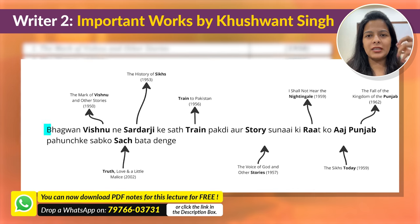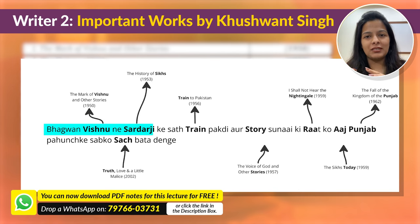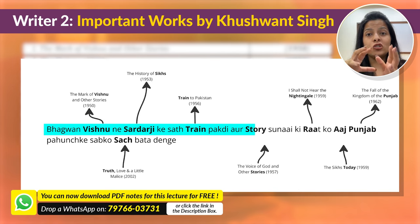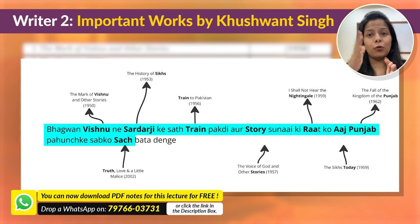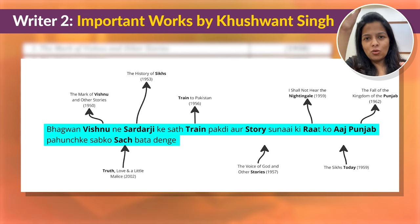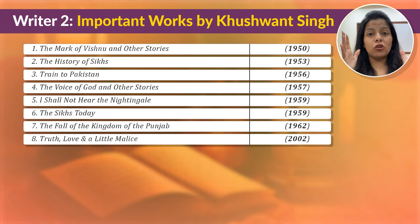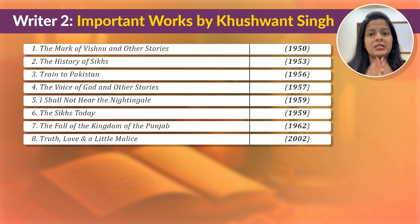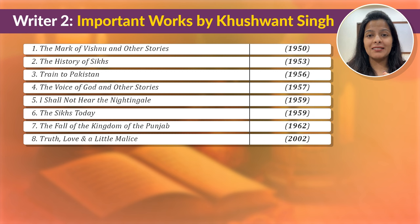The mnemonic to remember Khushwant Singh's works chronologically is: 'Bhagawan Vishnu sardar ji ke saath train pakadi, aur story sunai ki raat ko aaj Punjab pahunch ke sab ko sach bata deenge.' If you remember this one line, all the keywords are in it, and you can recall the entire chronology. Now let's look at the most famous work by Khushwant Singh — Train to Pakistan.